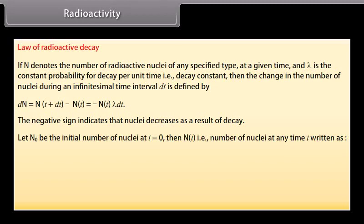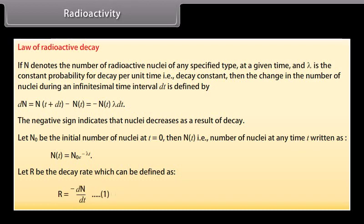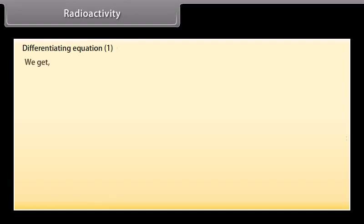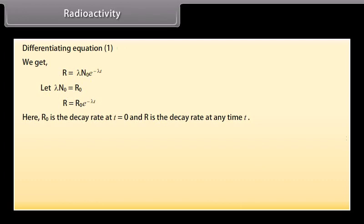Let N₀ be the initial number of nuclei at t is equal to 0. Then N(t), that is number of nuclei at any time t, is written as N(t) is equal to N₀ into e raised to the power minus λt. Let R be the decay rate which can be defined as R is equal to minus dN by dt. Name it as equation 1. Differentiating equation 1, we get R is equal to λN₀ e raised to the power minus λt. Let λN₀ equal to R₀. R is equal to R₀ e raised to the power minus λt. Here R₀ is the decay rate at t is equal to 0 and R is the decay rate at any time t.